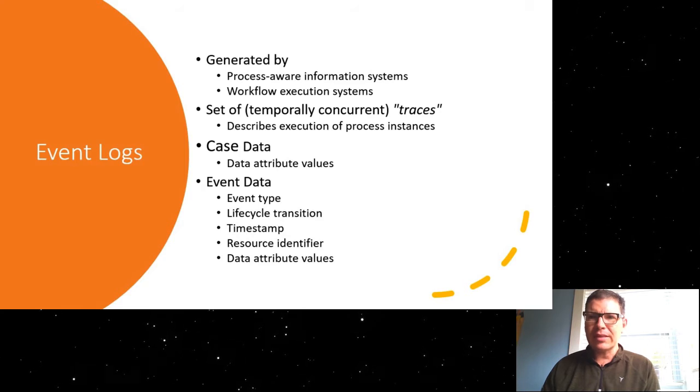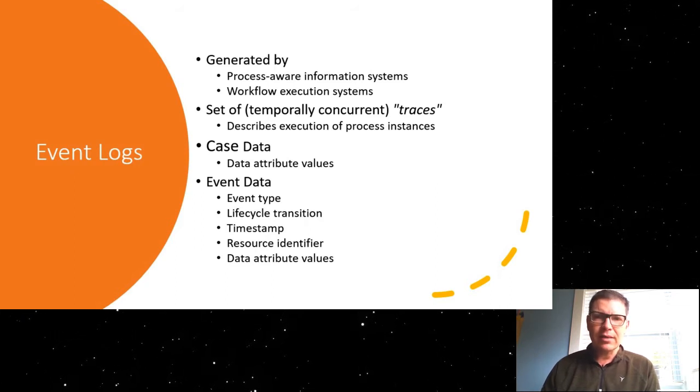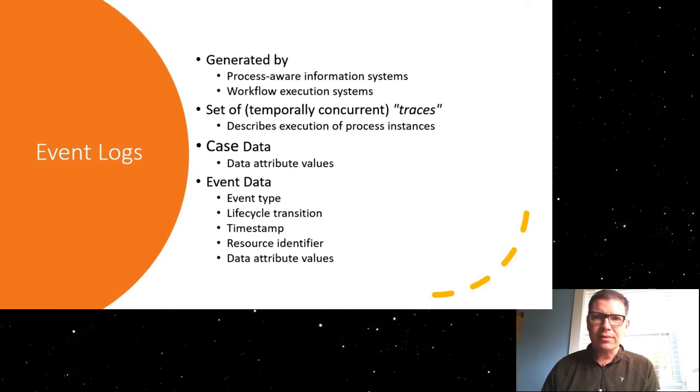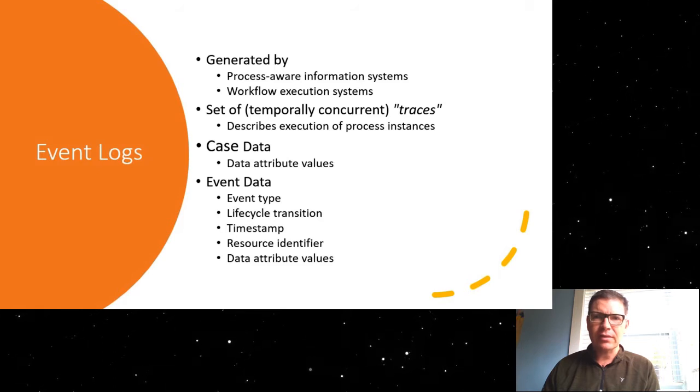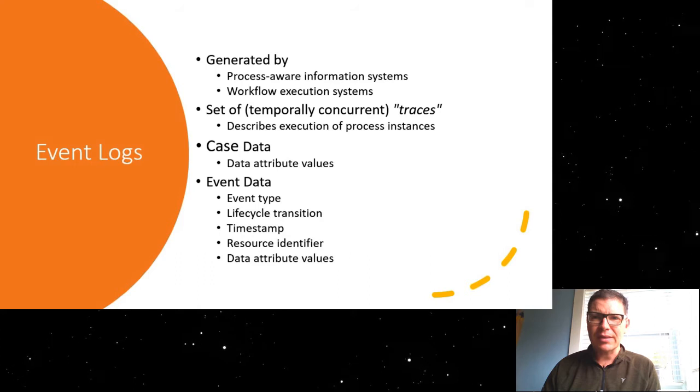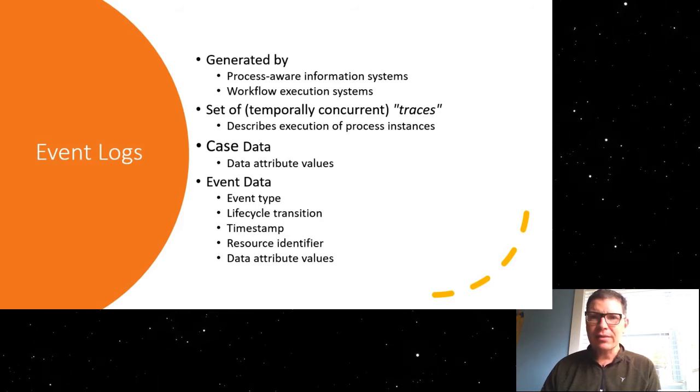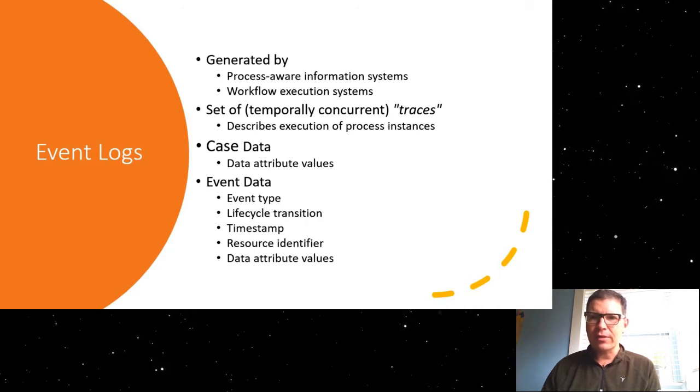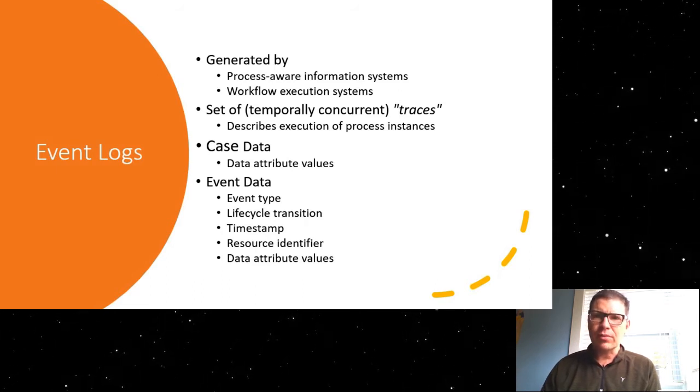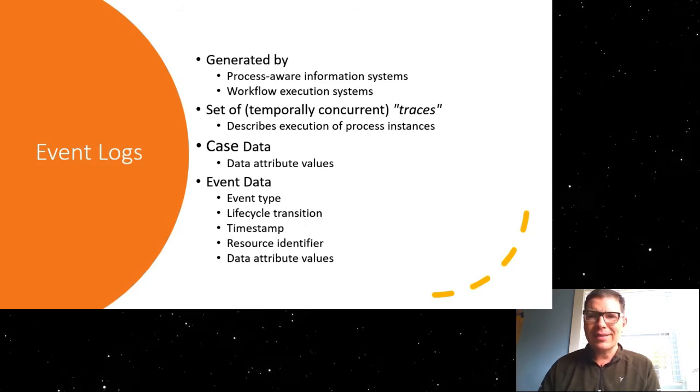And the data that we get is, first of all, case level data. So for example, let's take a student registration process, the case level data might be the student number, the faculty or degree program that the student wants to register for. This is independent, and it's always the same for all the different events or activities in that trace. Then we get event data, so this is specifically specific to the different events that happen in this process. So we might get the event type, describing the activity that is being carried out here, we might get a life cycle transition information, so that tells us whether this event signifies the start or the end of an activity. We usually get a time stamp, we might get a resource identifier, whether that's a student number or an employee number or whoever carries out this activity, and we have different data attributes that are specific to the activity that is being carried out here.